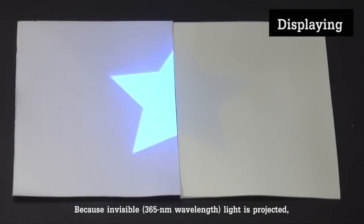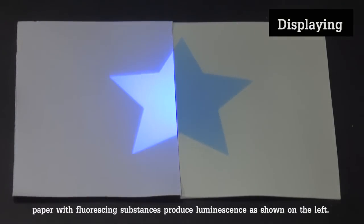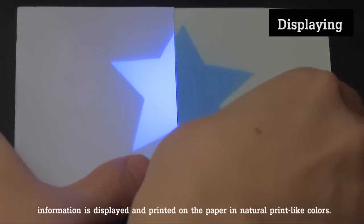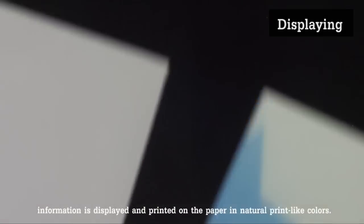Because invisible ultraviolet light is projected, paper with fluorescent substances produce luminescence as shown on the left. On the other hand, as for the proposed photochromic paper, information is displayed and printed on paper in natural current light color.